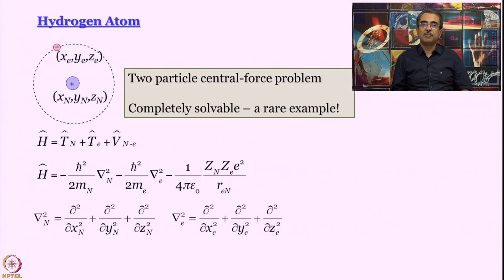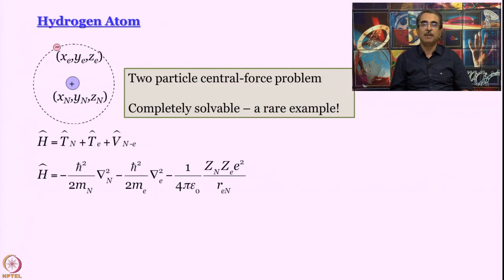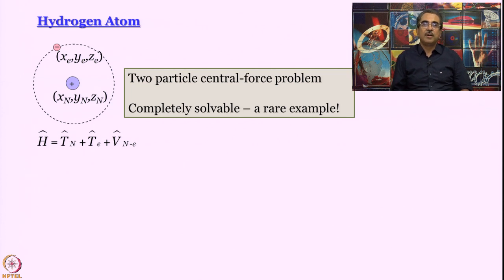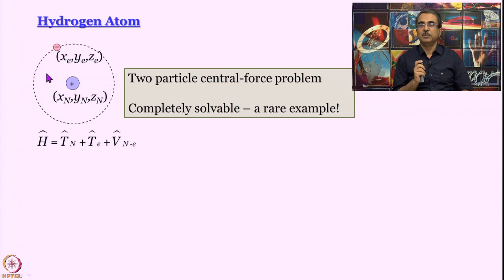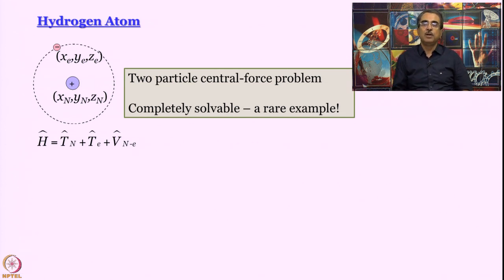To formulate the hydrogen atom problem in quantum mechanics, we first write down the Hamiltonian. The hydrogen atom is a two-particle central force problem: the nucleus contains all the positive charge, and the electron moves under its attractive potential. Whenever we have a two-particle problem, we try to reduce it to two one-particle problems, which are much easier to handle.